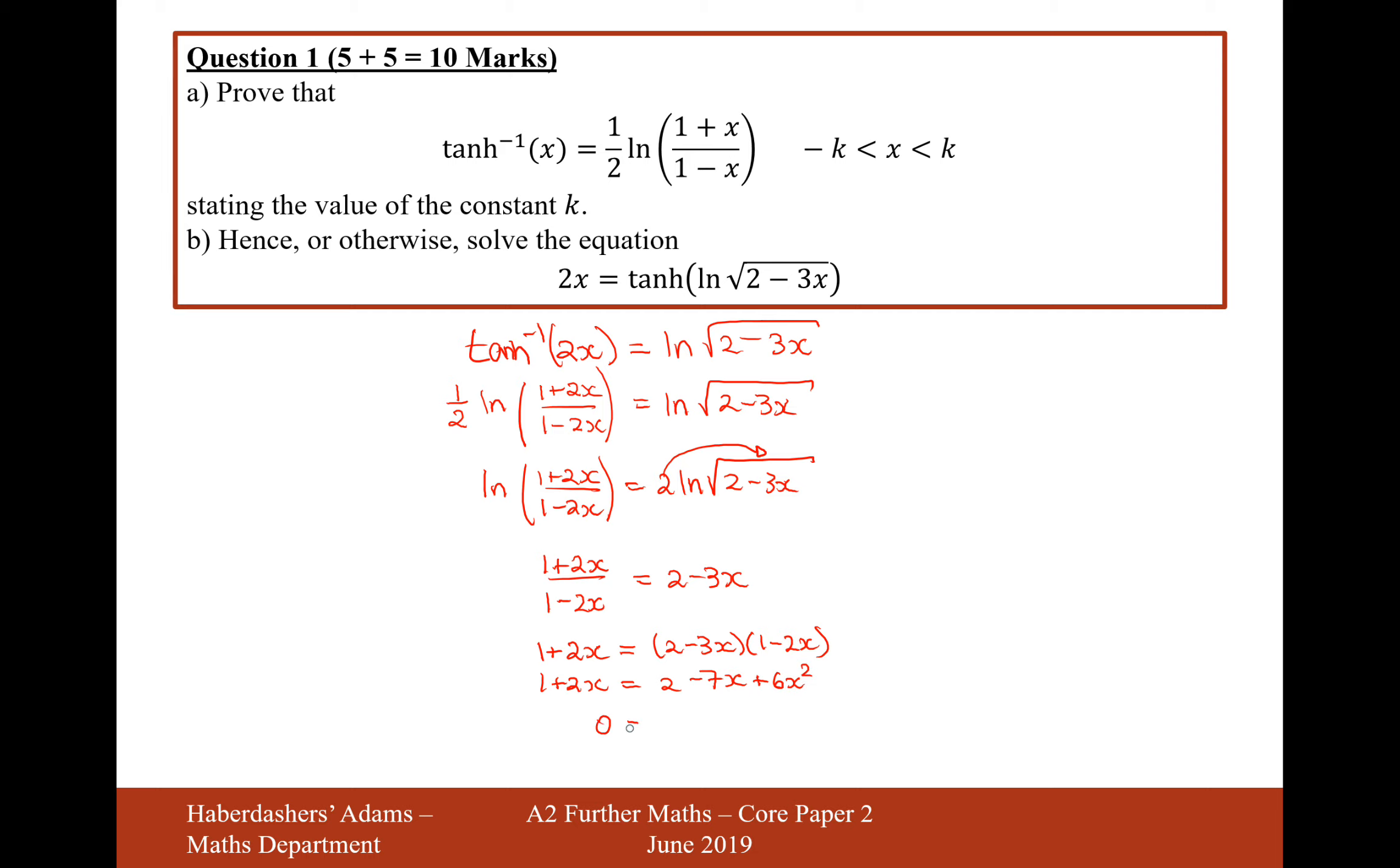Move everything onto the right-hand side now. It's going to be 6x squared minus 9x and then plus 1. Let's just type this into the calculator. So 6x squared minus 9x and then plus 1.